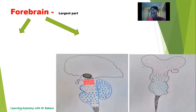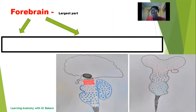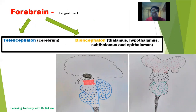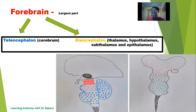The forebrain is the most superior part of the primary brain vesicle and the largest part. It is made up of two subdivisions. Two sub-regions will finally develop from the prosencephalon: the telencephalon and the diencephalon. The telencephalon becomes the cerebrum hemisphere, while the diencephalon becomes the thalamus, the hypothalamus, the subthalamus, and also the epithalamus. All these structures are located below the cerebrum hemisphere.